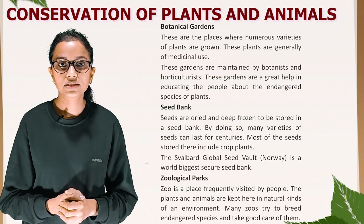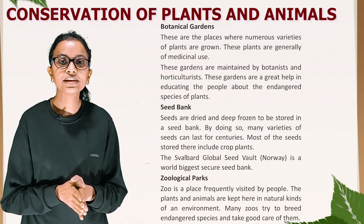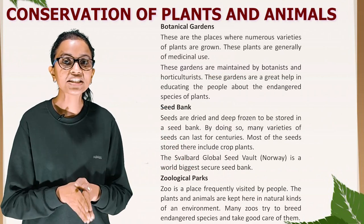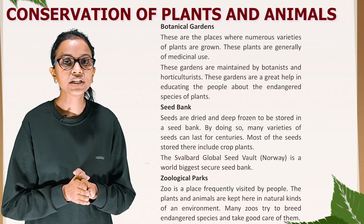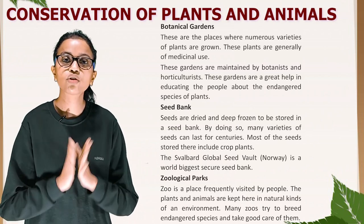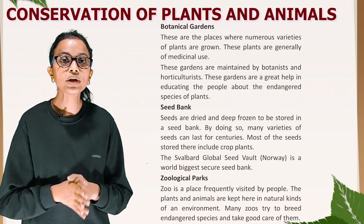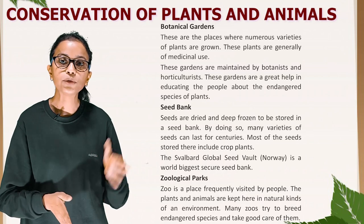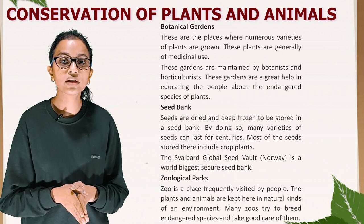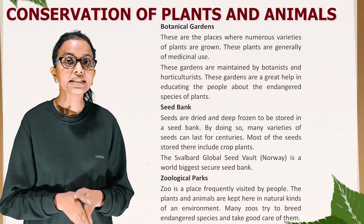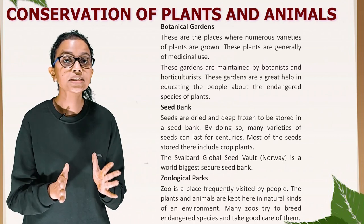Botanical gardens are places where numerous varieties of plants are grown, generally of medicinal use. These gardens are maintained by botanists and horticulturists and are a great help in educating people about endangered species of plants. Seed bank: seeds are dried and deep-frozen to be stored in a seed bank, where many varieties of seeds can last for centuries. Most seeds stored include crop plants. The Svalbard Global Seed Vault in Norway is the world's biggest secure seed bank.